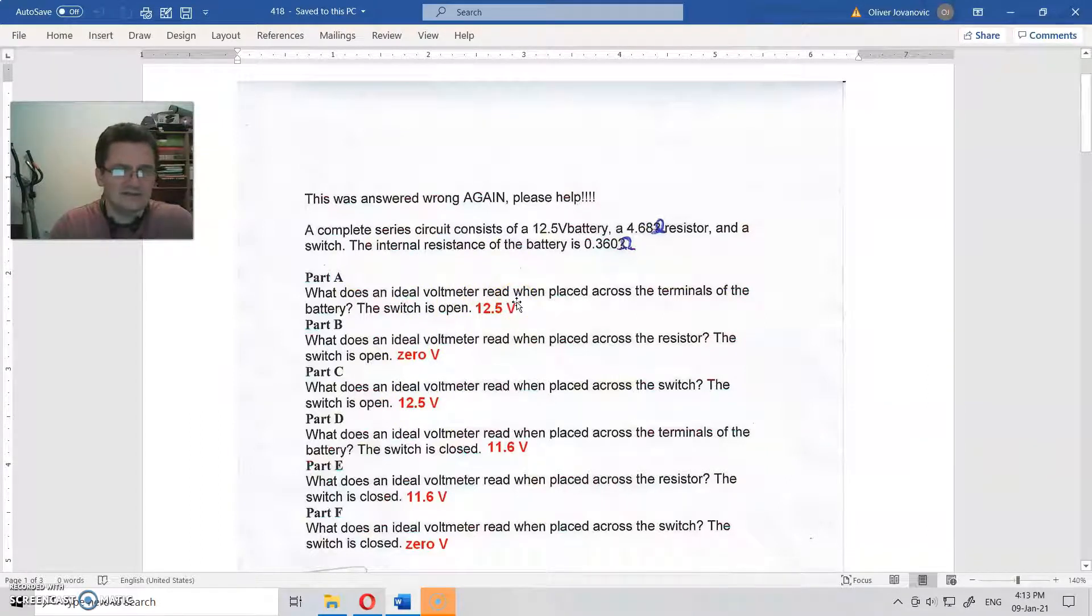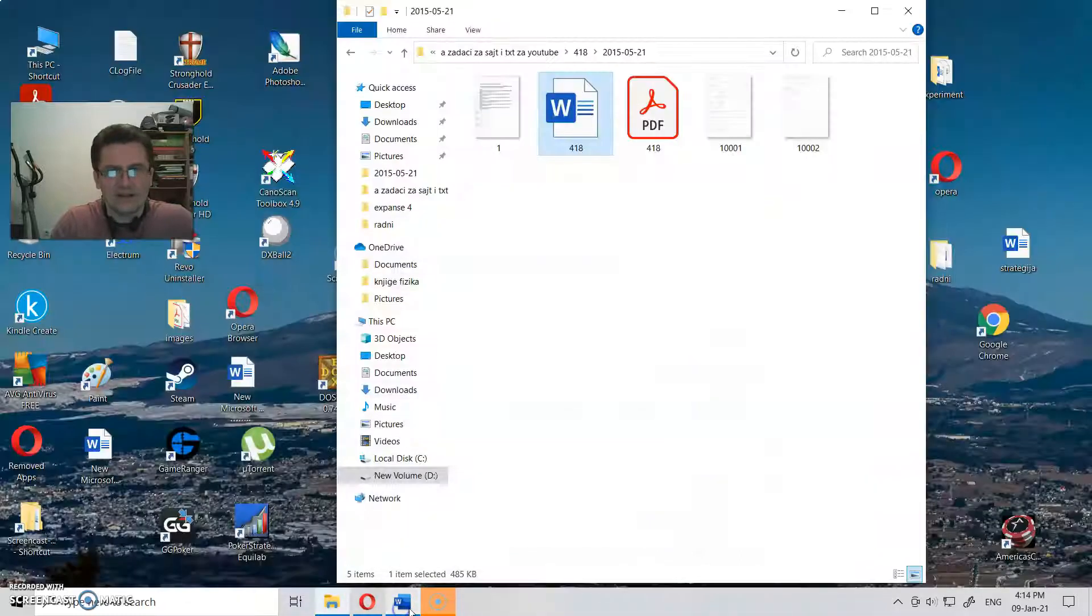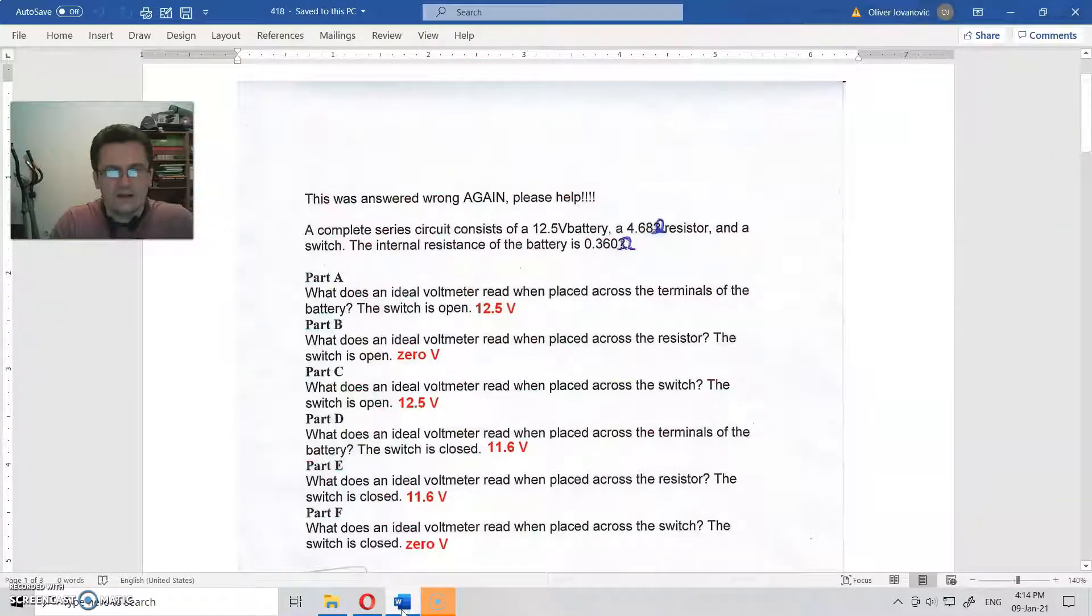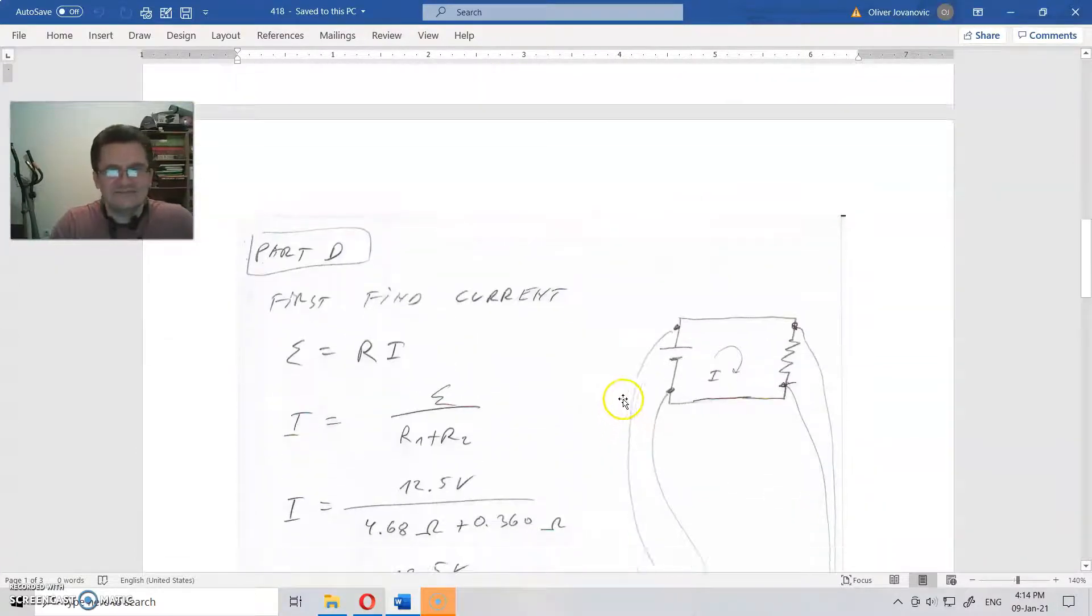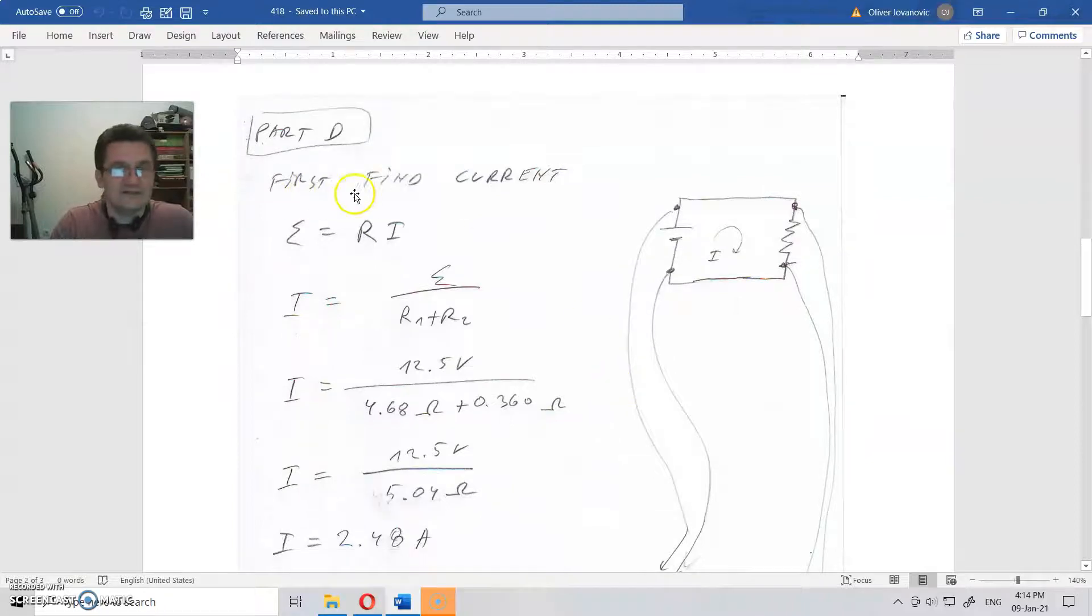Part D: What does an ideal voltmeter read when placed across the battery? The switch is closed. What is happening now? There is a current throughout the system. We will just calculate what that current is first. You didn't see that. Just for play. First we need the current.